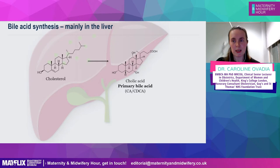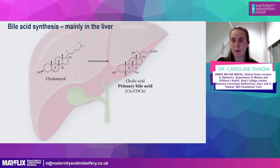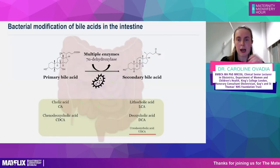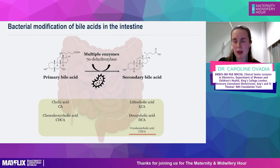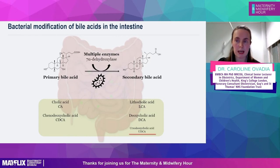Bile acids are produced from cholesterol — most are produced in the liver and form primary bile acids called cholic acid or chenodeoxycholic acid. You may see bile acid measurements broken down into different types, and that's just telling you what different types there are. These go out in the bile and get released into the gut when you eat, where bacteria can convert them into secondary bile acids.